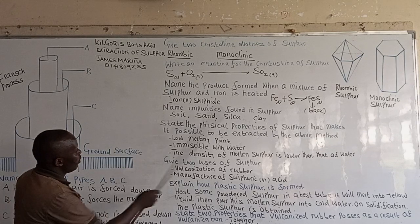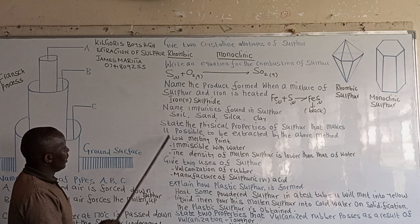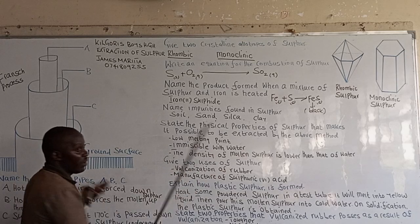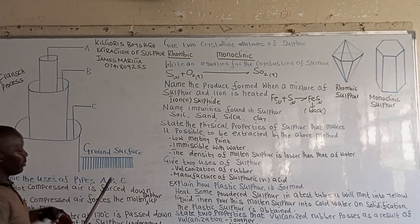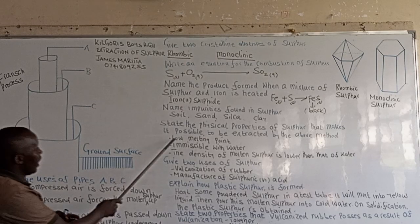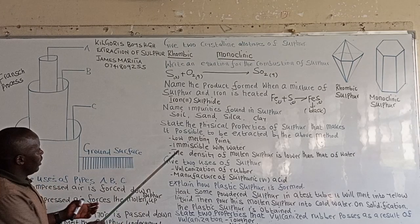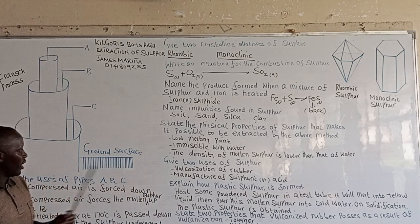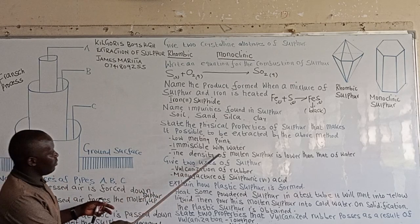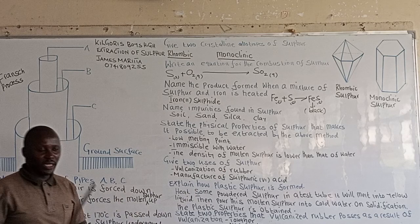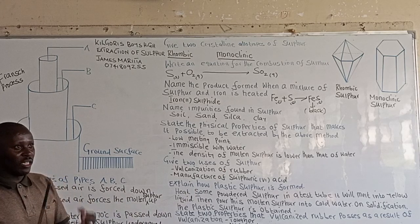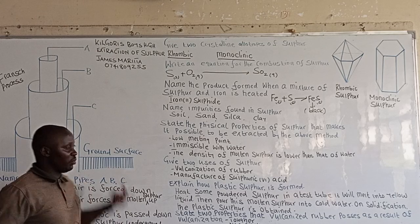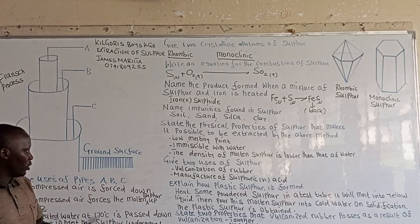State the physical properties of sulfur that make it possible to be extracted by the above method. There are two points: sulfur is immiscible with water, and the density of sulfur is lower than that of water. Those are the physical properties that make sulfur extractable through the Frasch process.